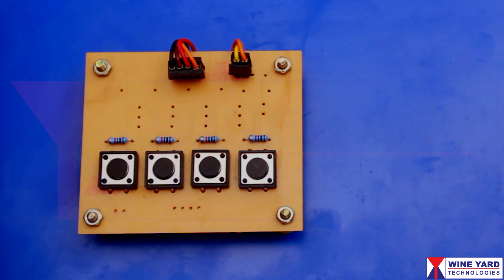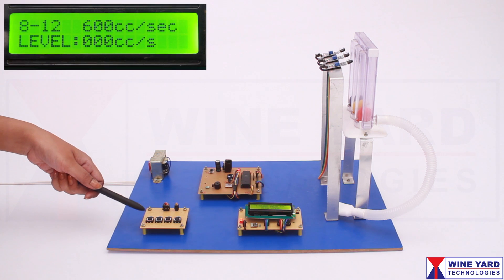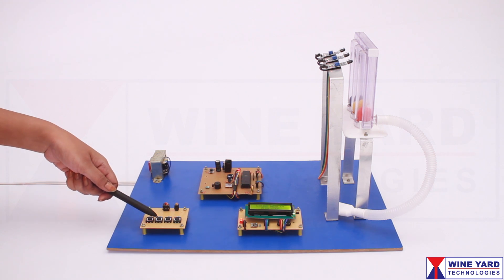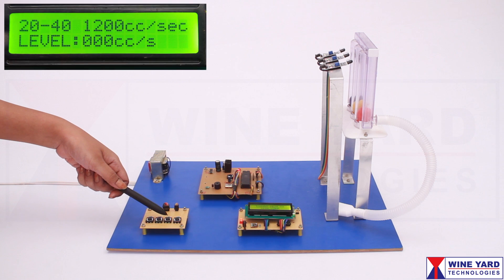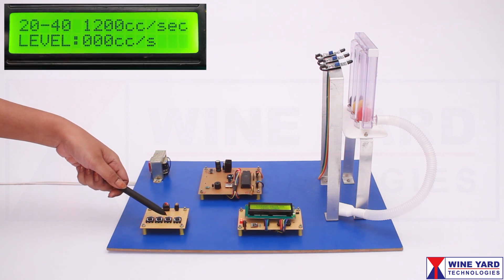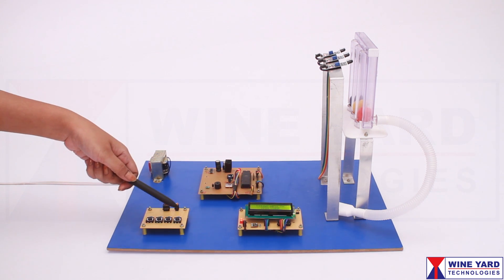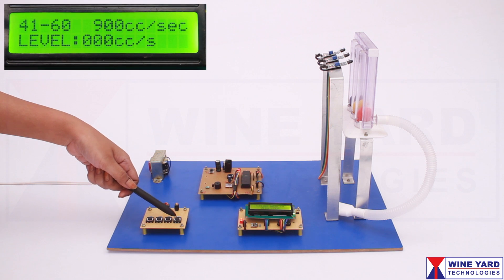These switches are to select the age of the user. This switch is for the age group of 8 to 12 years. This switch is for 13 to 19 years. For the age group of 20 to 40, use this switch. And this for 41 years and above.